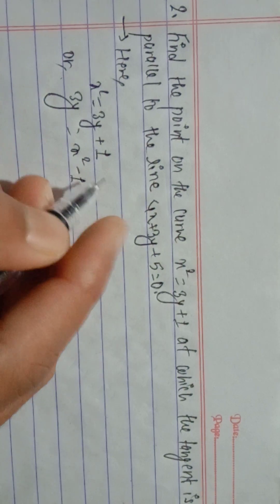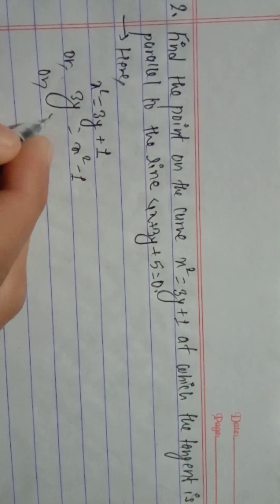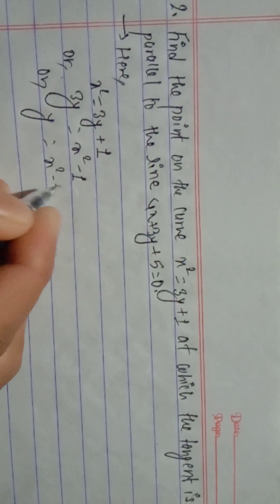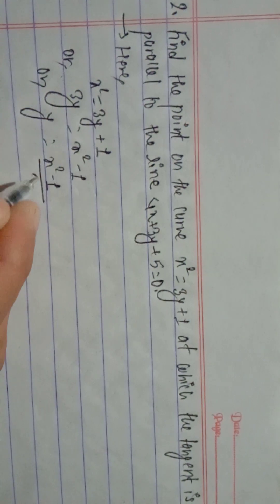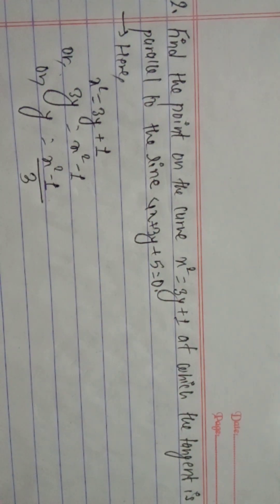3y equals x square minus 1. Therefore, y equals x square minus 1 divided by 3.